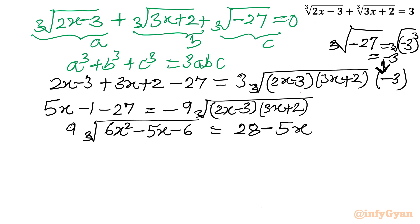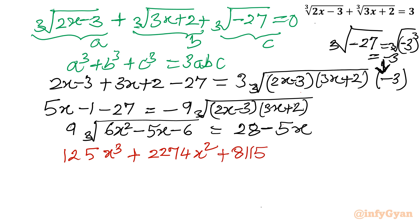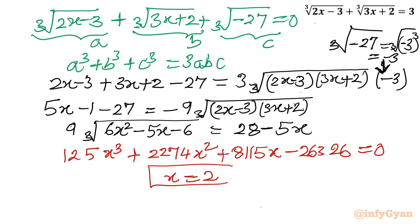The resulting cubic equation is 125x³ + 2274x² + 8115x - 26326 = 0. The rest of the steps are identical to method 1, giving x = 2 as the only real solution.